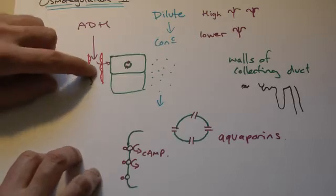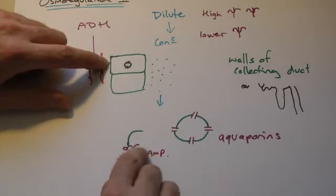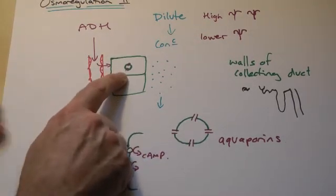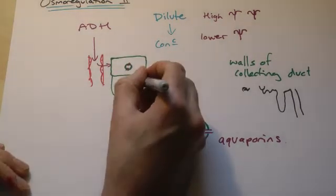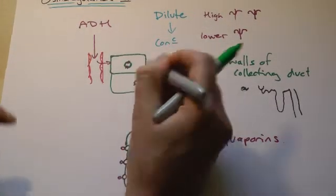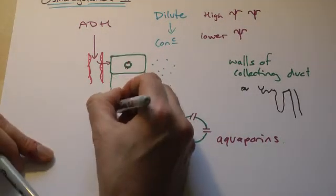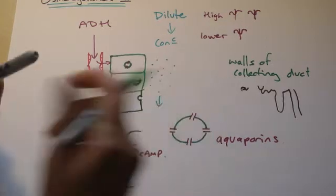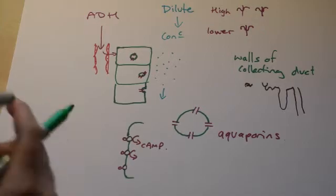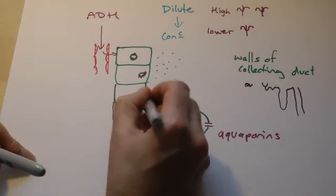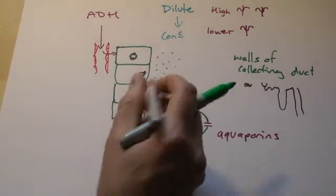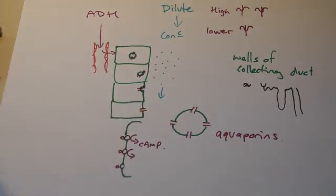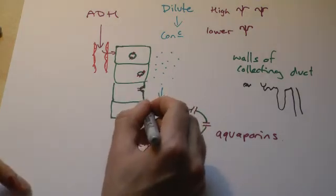The ADH comes down here into the receptor, which causes some kind of enzyme pathway in here. And it causes these little vesicles to move to the surface of the cell. So the vesicle moves along. And then the vesicle will fuse with that membrane, which now means the aquaporins are part of or integral to that membrane. And once the aquaporin is there, water can flow through it.